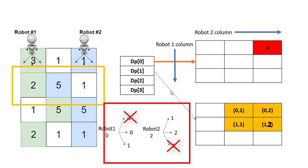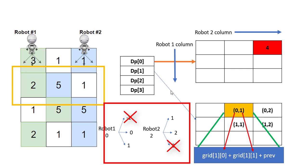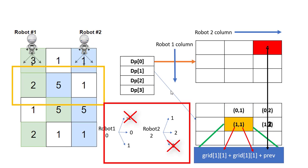To fill these values: for cell (0,1), the value will be grid[1][0] for robot 1 plus grid[1][1] for robot 2, plus the previous DP value from which we can reach this combination. We were given the rule that if both robots are at the same column, we count the cherries only once. So for cell (1,1), where both robot 1 and robot 2 are at the same column, we add the grid value only once, not twice.